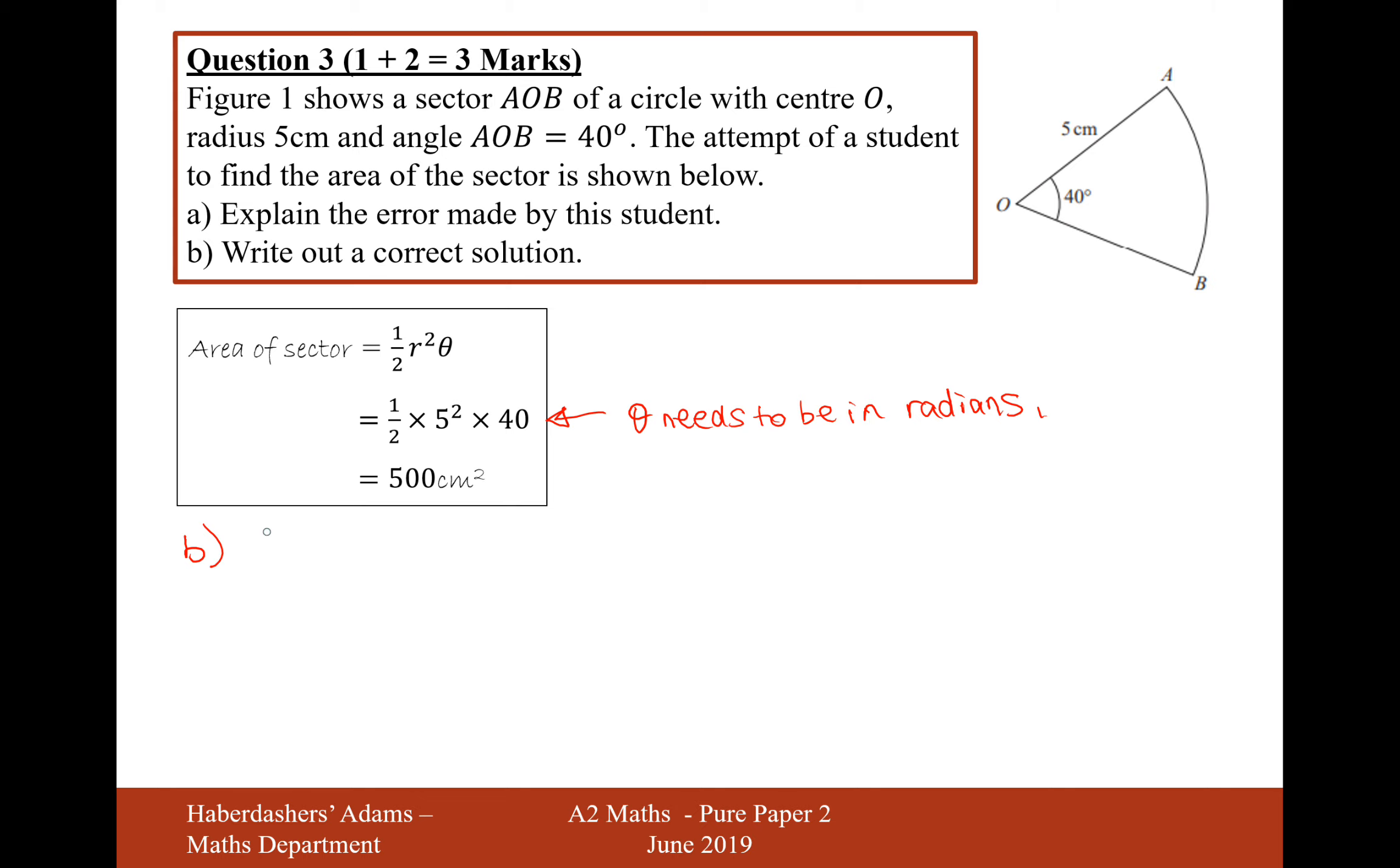It's going to be half times 5 squared times, and now what's 40 going to be as a radian? Well, I know that pi is equal to 180.